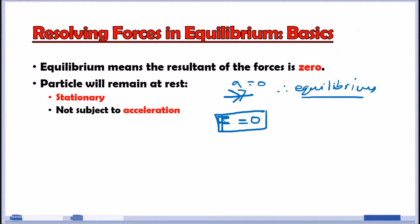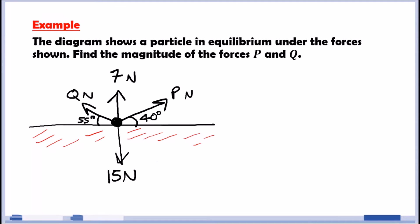So an example. The diagram shows a particle in equilibrium under the forces shown. We've got to find the magnitude of the forces P and Q. Now, in this typical example, this might look a bit crazy, but really, the whole process is that we need to consider vertical forces and horizontal forces and set them equal to zero and pretty much collect like terms.